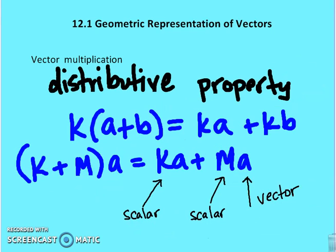So vector multiplication and also division, which would just be multiplying the vector by a fraction or a value between 0 and 1, holds true for the distributive property, which means that K, which is my scalar, with the value that I'm multiplying the vector by times in parentheses A plus B is the same as K, A plus K, B, or K scalar plus M scalar times A is equal to K, A plus M, A, where A is the vector.